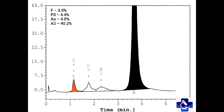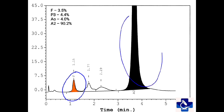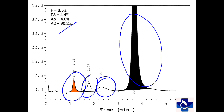In this case, HbF is mildly raised around 3.5%. We have the major fraction here that is A2, above 90%. P3 is around 4.4% and A0 is around 4.0%. This case is that of hemoglobin E homozygous, and the A0 is actually glycated HbE.